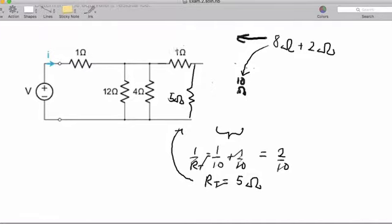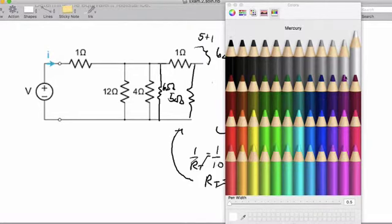Now we have the 1 ohm and 5 ohm in series, so 5 plus 1 gives us 6 ohms. We can combine this into a 6 ohm resistor when we add in series, so we can just wipe out that combination.